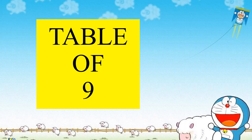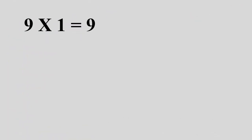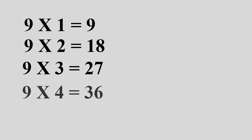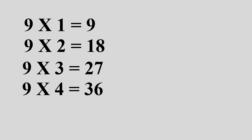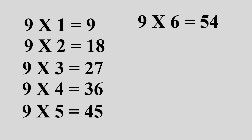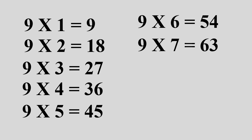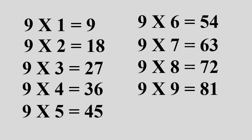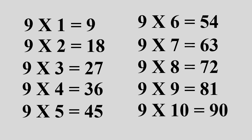Table of 9. 9 1s are 9. 9 2s are 18. 9 3s are 27. 9 4s are 36. 9 5s are 45. 9 6s are 54. 9 7s are 63. 9 8s are 72. 9 9s are 81. 9 10s are 90.